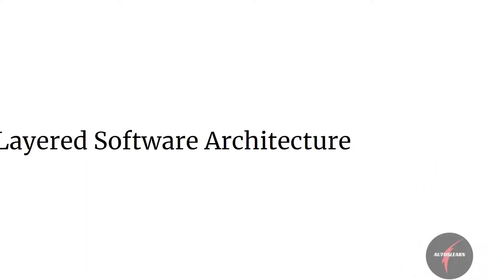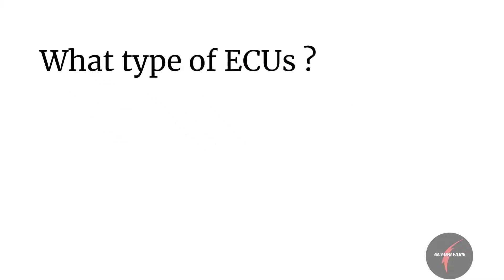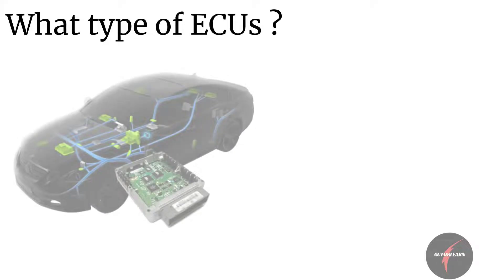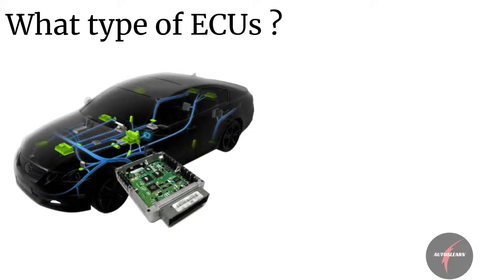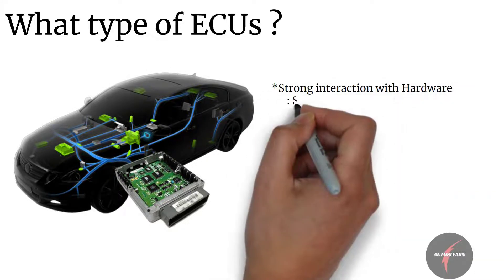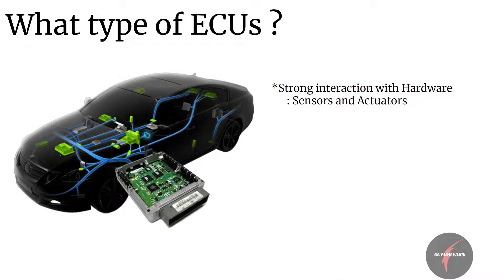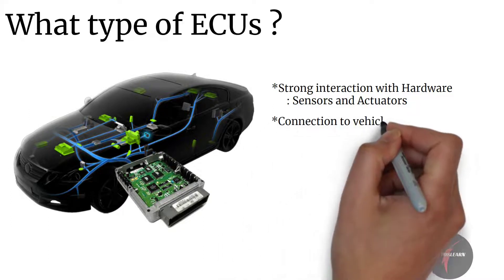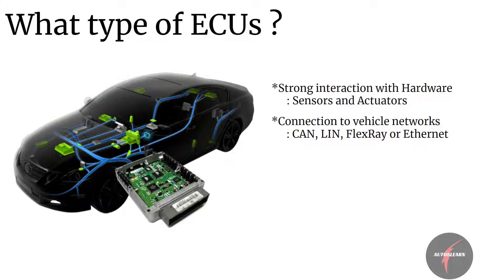Before we dive in, let's first try to address the question on what type of ECUs were considered for developing the AUTOSAR specification. AUTOSAR is dedicated for automotive ECUs. Such ECUs have the following properties: they have strong interaction with hardware, basically sensors and actuators. They are connected to vehicle networks like CAN, LIN, FlexRay or Ethernet.